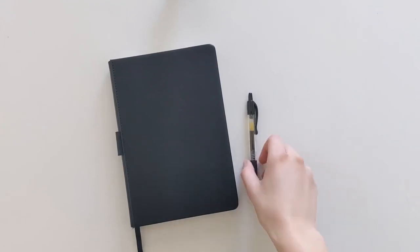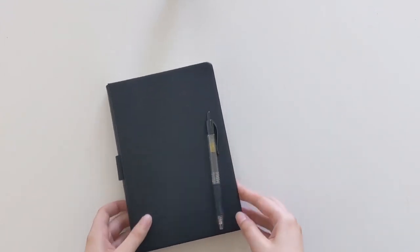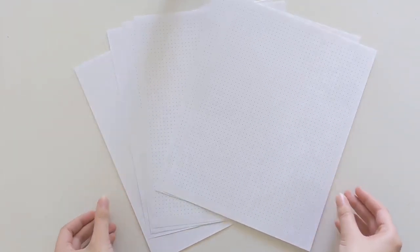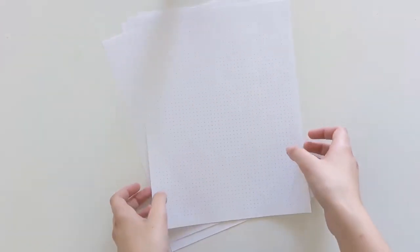All you really need to start your bullet journal is any notebook and a pen. Of course, it's easy to complicate things beyond that, but you don't need very much to start. If your notebook doesn't have the kind of paper you want to use, such as dotted or gridded, you can easily print some online and make your own notebook. Studio guide Richard showed how to do this in a previous Make Time video called Japanese Book Binding.